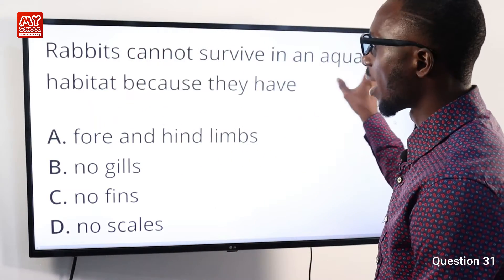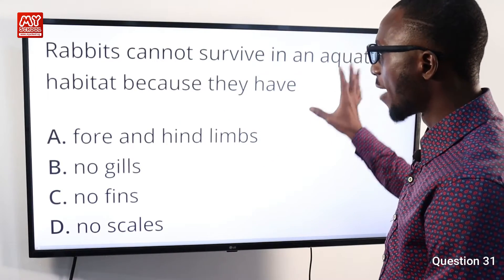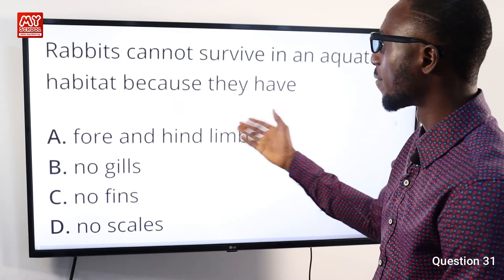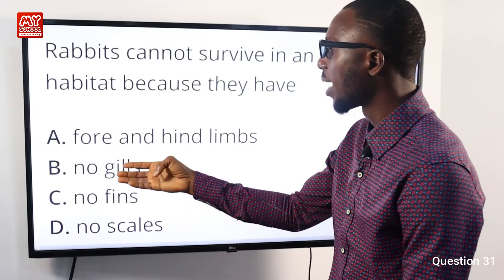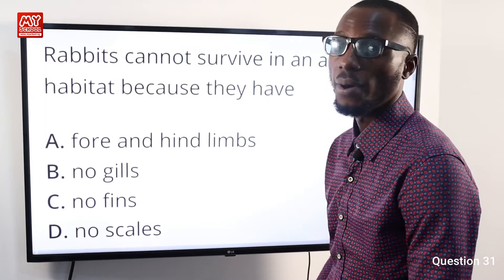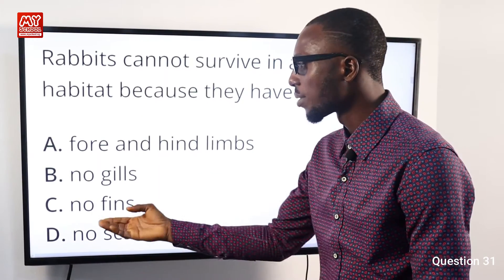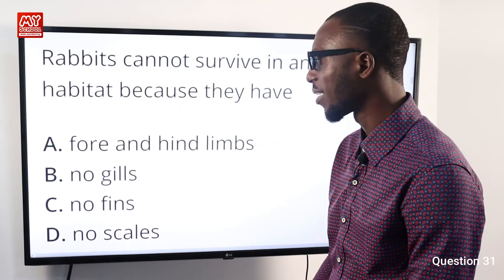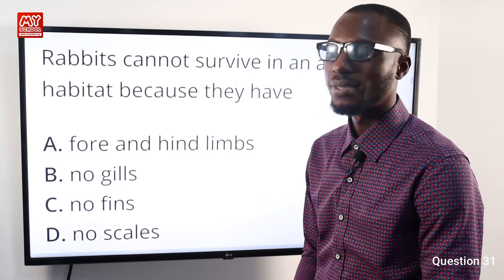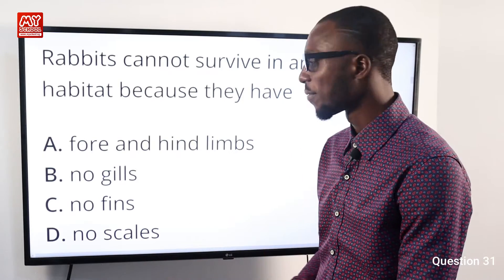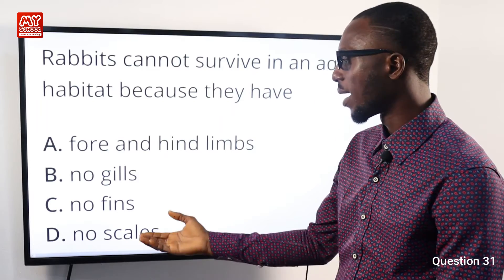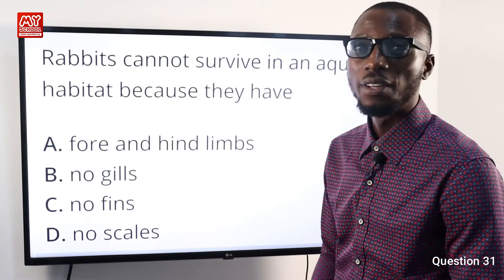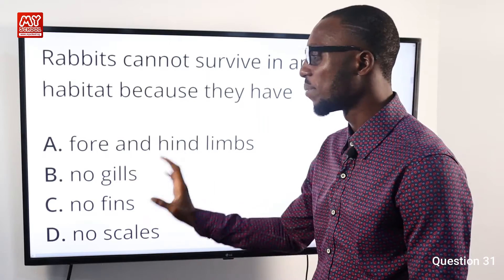Question 31: Rabbits cannot survive in an aquatic habitat because they have no gills. Option A (four limbs) doesn't prevent aquatic survival. Option C (no fins) is incorrect since water snakes survive without fins. Option D (no scales) is also incorrect since reptiles and snakes can enter water and survive. A rabbit cannot survive in water because it has no gills, so option B is very correct.